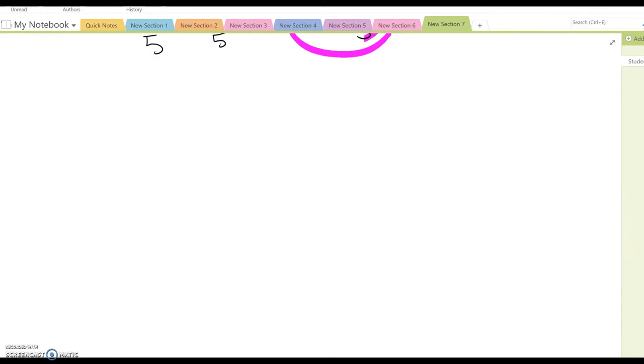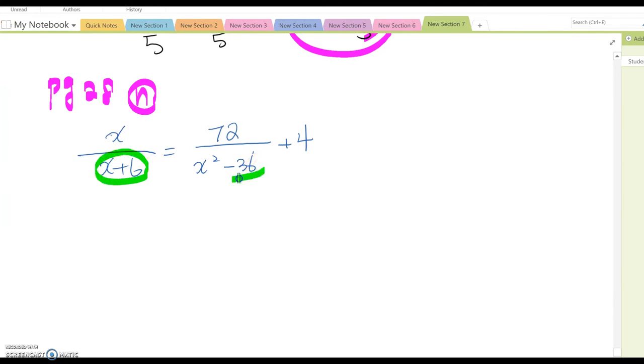Let's talk about a little bit harder one. Page 28, I am going to cover letter N on this video, which is x over x plus 6 equal to 72 over x squared minus 36 plus 4. As you see, x plus 6, x squared minus 36, they are the denominator factors. Especially this one, you can rewrite this.